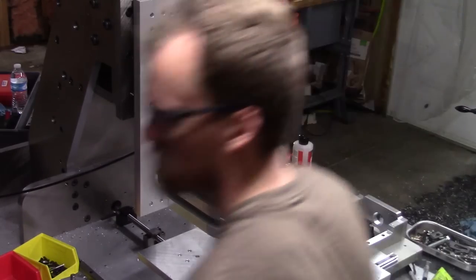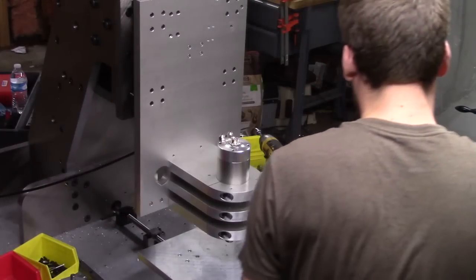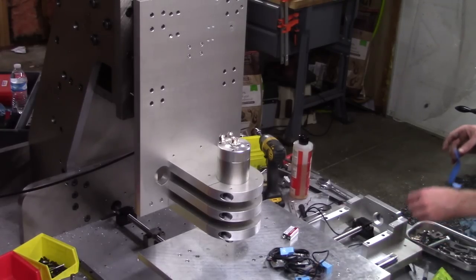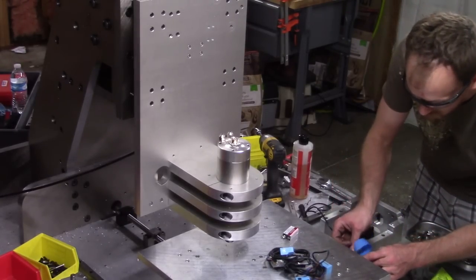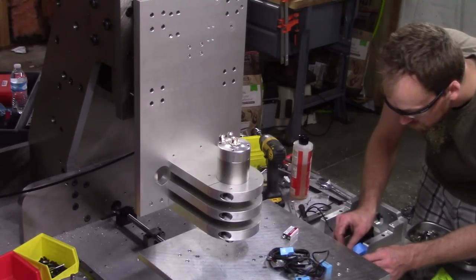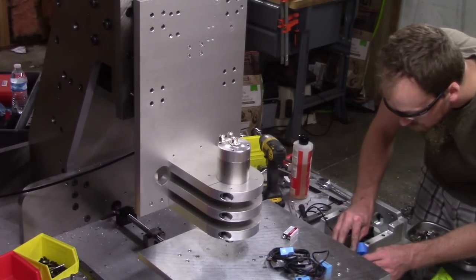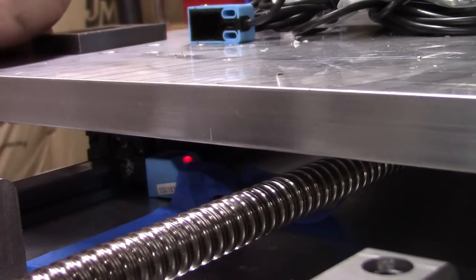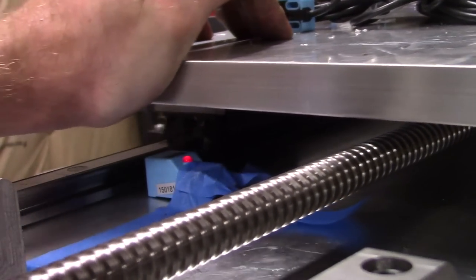I'm using inductive proximity sensors to detect when linear bearings are near the end of travel. Inductive sensors don't need magnets like hall effect sensors and are great at detecting iron and steel. First I have to find the distance they can reliably sense the bearings. For that I used a 9 volt battery to power the sensors and watched as the LED turned on and off.